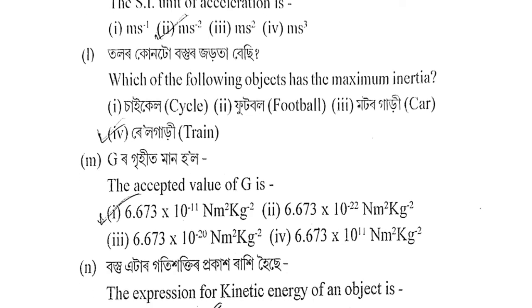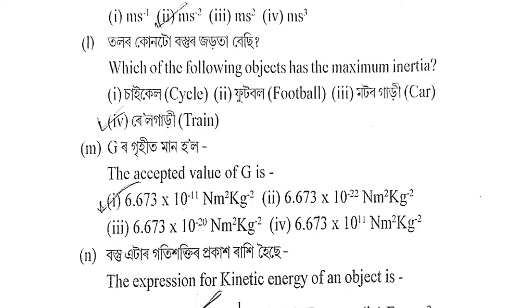Next question: Talor kun tu bostur zorota besi? Which of the following objects has the maximum inertia? Options: cycle, football, motor car (motor gari), or train (rail gari)? The correct answer is rail gari (train).